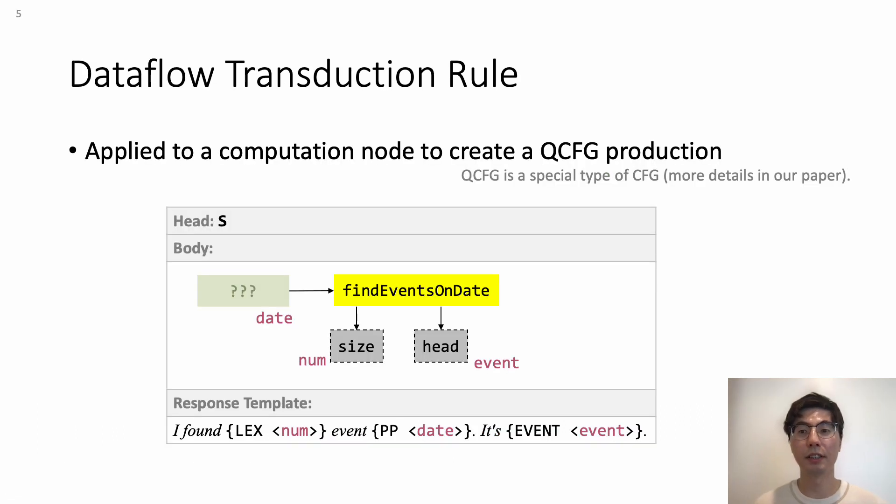The core part of the transducer is the set of data flow transduction rules. It is applied to a node to create QCFG productions. Each rule has a head, a body, and a response template.